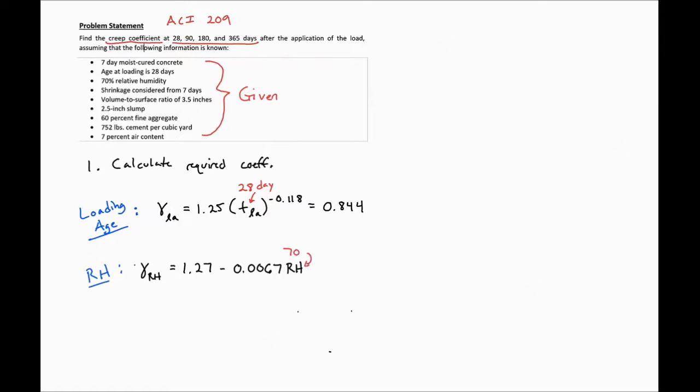So we plug in our 70 here, and we'll get a value of 0.801 for our relative humidity factor.